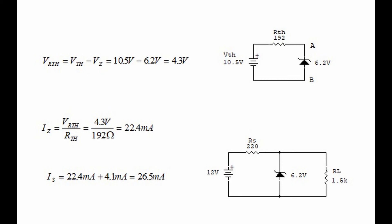Let's put the circuit back the way it was from the beginning so we can do some final calculations. The zener current is 22.4 milliamps, and earlier we calculated the load current as 4.1 milliamps. The total current through the series resistor is therefore 22.4 milliamps plus 4.1 milliamps, for a total of 26.5 milliamps.